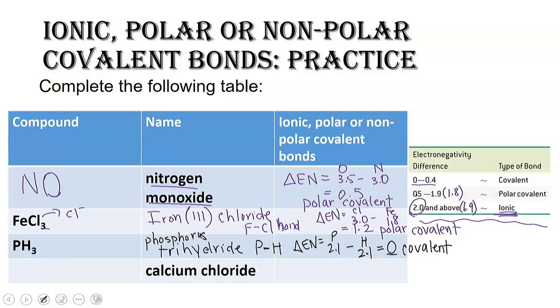All right. Last one. Calcium chloride. You're given the name. You've got to figure out the compound. Well, calcium, you know, is in group two. Chloride is in group seven. These become ions. Calcium is a 2 plus, and chloride is a 1 minus. And we swap out our charges, our superscripts as subscripts, and we get CaCl2 as our compound.